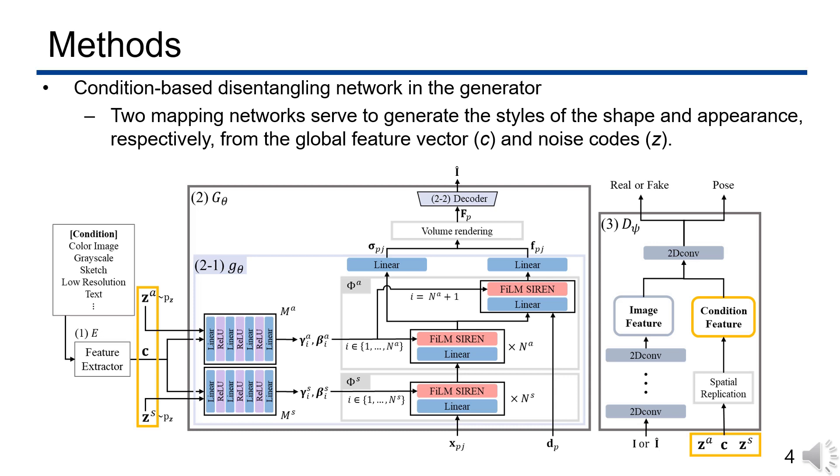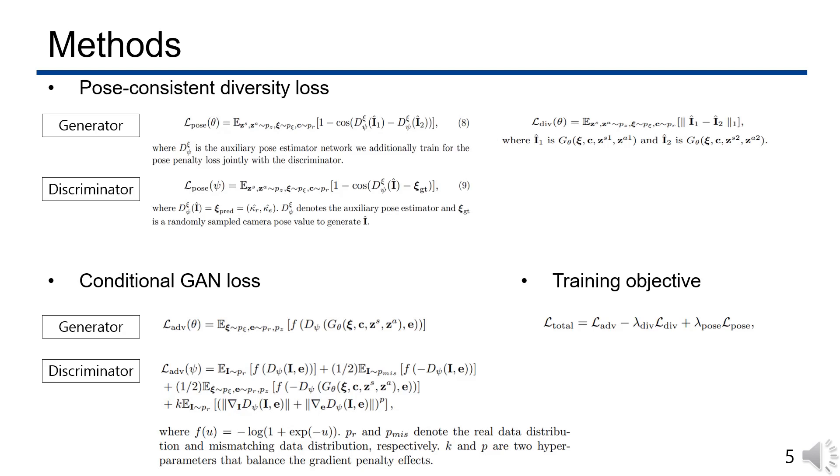For computation and memory efficiency, after volume rendering the features in small spatial size, we utilize 2D CNN decoder network to assemble the features to RGB images at a higher resolution. To enable the generator network to produce semantically diverse images based on the condition input, we regularize the generator network with the diversity-sensitive loss.